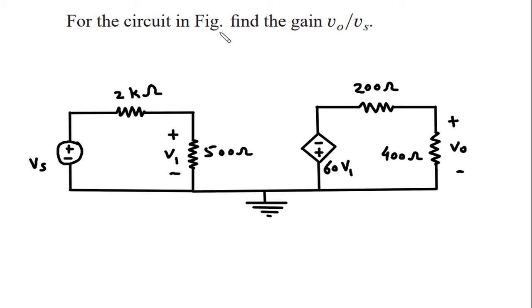For the circuit in figure, find the gain Vo by Vs. We have to find this Vo by Vs solution. First we will redraw the circuit.